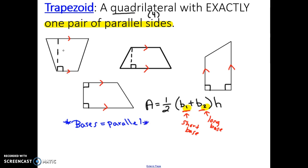For example, in the top trapezoid shown, the bases are the top side and the bottom side because they're parallel. The shorter bottom side is base one and the longer top side is base two. In the trapezoid on the far right, the two bases are the sides on the left and right — base one is the shorter one and base two is the longer one on the right.